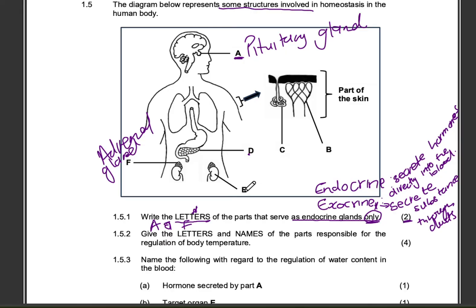We're not going to choose letter E because letter E is a kidney and a kidney does not secrete any hormone. The kidney is a target organ for a number of hormones. For example, ADH and aldosterone.